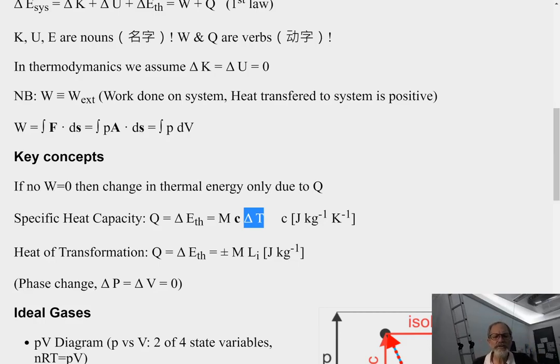The heat of transformation is also defined this way. Q, again, the change in thermal energy is equal to M L, and then L is a specific constant. For example, the change of one gram of water from ice to liquid. That would be this one gram. And then we will find a specific constant for water to liquid, that transition. So, this is for a phase change. And in a phase change, we generally assume delta P equals delta V equals zero.